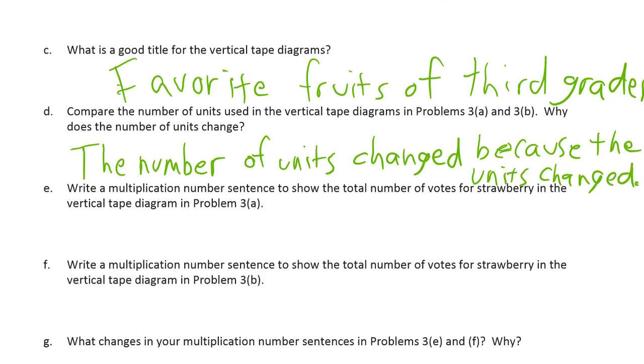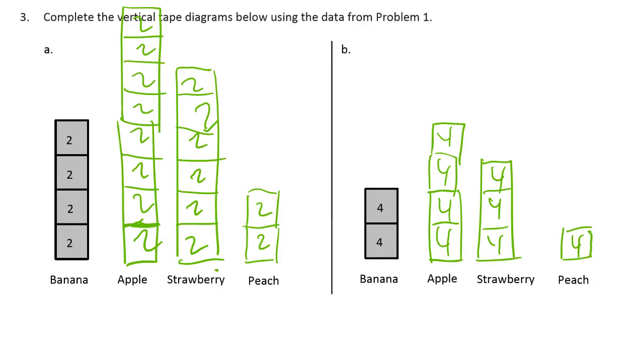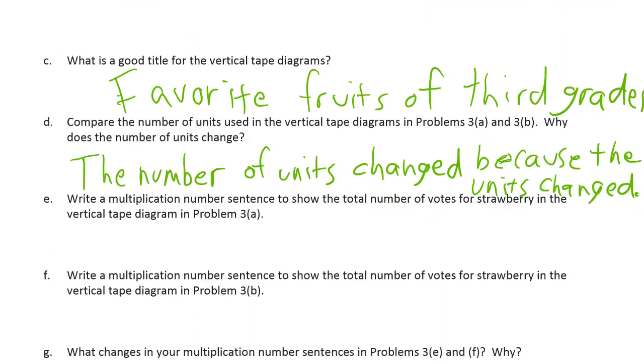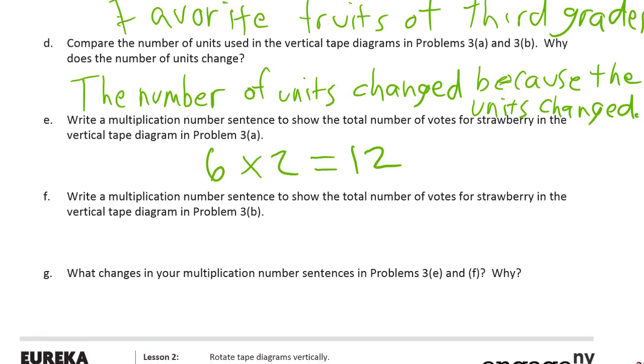Write a multiplication number sentence to show the total number of votes for strawberry in the vertical tape diagram in 3a. So 3a is the one with all the twos, and we're looking at strawberries. It's one, two, three, four, five, six twos. So multiplication number sentence: six times two equals twelve. That's not a word problem. It just told us to write a multiplication number sentence, and that's it. We don't need an answer statement for that one.